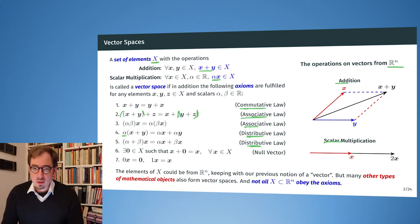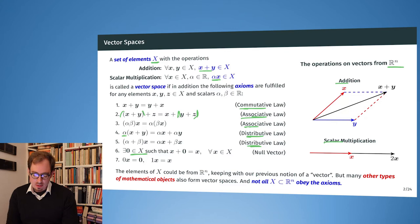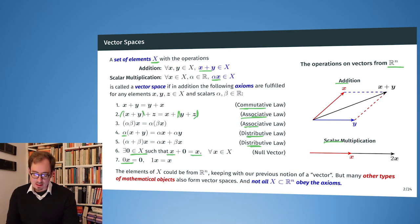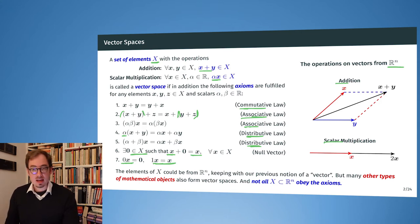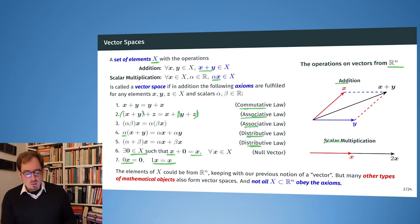On top of that, we require that there is a null vector. There exists some element of X such that when I multiply any element of X with zero I get out the null vector, and when I add the null vector to some other element I get exactly that element back. Multiplying anything with zero gives the null vector, and multiplying anything with one gives the same element back. These are the basic axioms of vector spaces. Importantly, in the proofs we will see today only these axioms are used, so nothing depends on the vectors being geometric objects — everything follows from the axioms.